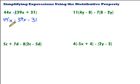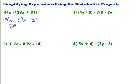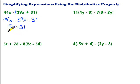We can combine those. Think of it as having 44 x's in one pile and taking away 39 x's — 44 minus 39 leaves us with 5x. Then we bring down the minus 31 because there are no other constant terms to combine it with. This is simplified because 5x has the variable x and negative 31 does not, so we can't combine those. We're all done with that one.